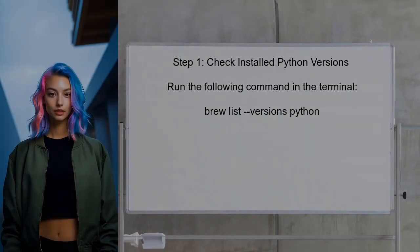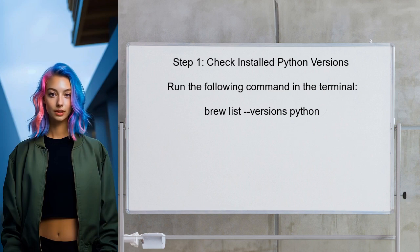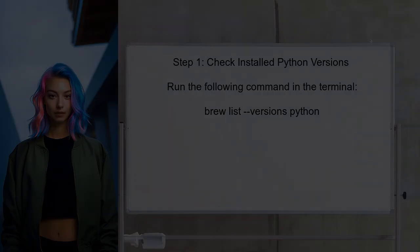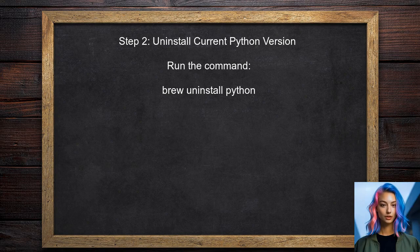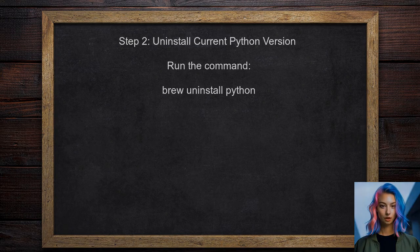To begin downgrading Homebrew Python, first check the currently installed versions of Python. This can be done by running a specific command in the terminal. Next, uninstall the current version of Python. This is important to ensure that the older version can be installed without conflicts.